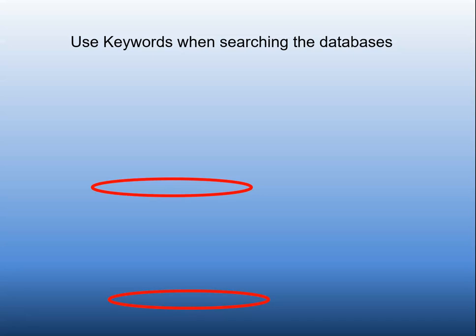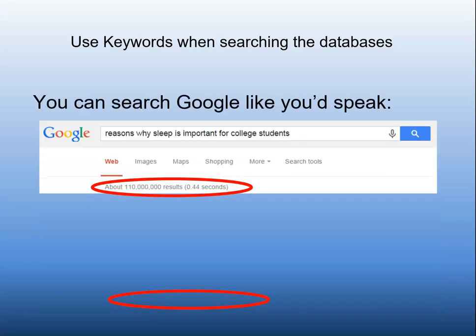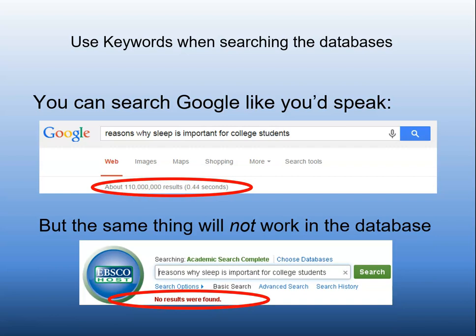Remember those keywords you came up with in the research module when brainstorming keywords? Now we're going to put those to good use. All of you are used to searching with Google. Google uses a type of searching called natural language, meaning you can put anything in the search box just like you would say it. Google will drop out the unimportant words and bring you millions of websites containing what it thinks are the important words in your search. But the same thing will not work in the databases.